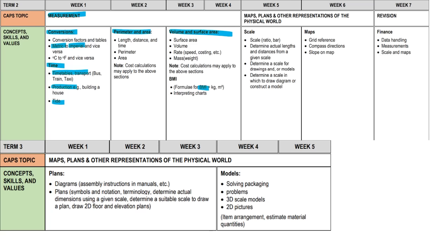Mass and weight — BMI is your weight over your height squared, and then you compare to the chart to see if you're underweight, healthy weight, overweight, or obese. For scale, you've got a ratio scale where they give you a ratio — for example, one centimetre equals ten kilometres — or a bar scale, and it can work either way.